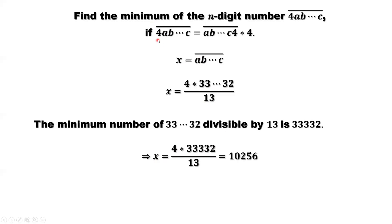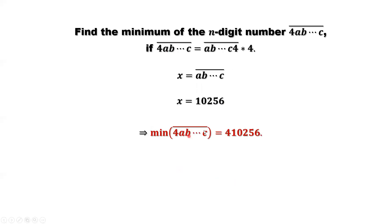Our answer is 4 followed by abc. X is abc, which is 10256. So here is the answer. We need to add 4 in front of this number. The solution is 410256.